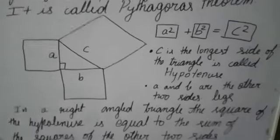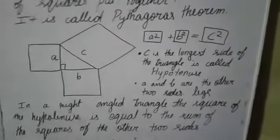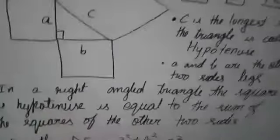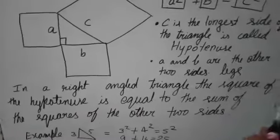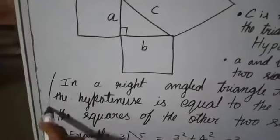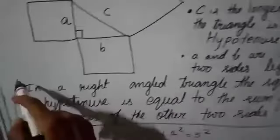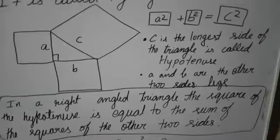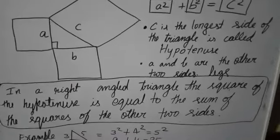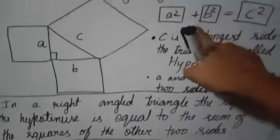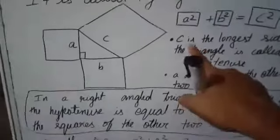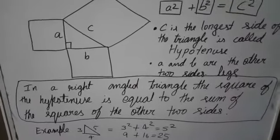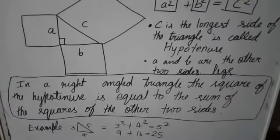So now the main definition: in a right angle triangle, the square of the hypotenuse is equal to the sum of the squares of the other two sides. This is the definition of the Pythagoras theorem.